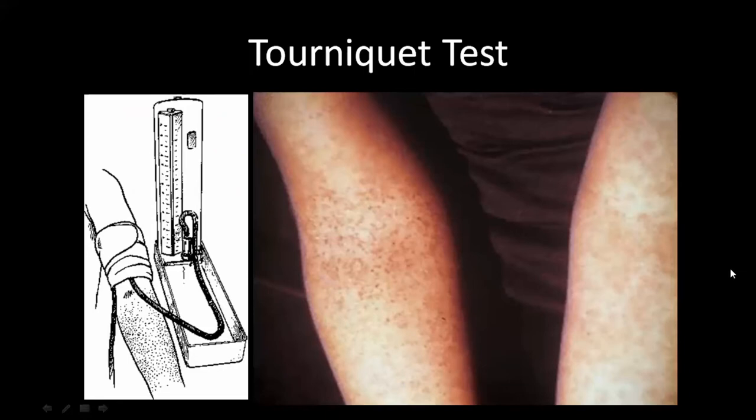The tourniquet test involves placing a sphygmomanometer cuff on the patient, raising the pressure to between systolic and diastolic, and keeping it for 20 minutes. The number of petechiae are then counted in the cubital fossa. This is a typical positive tourniquet test result.